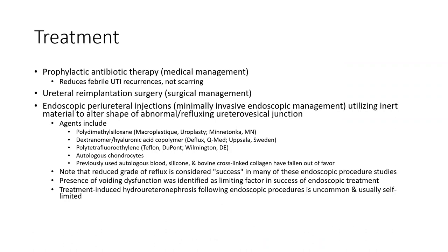Treatment options include: prophylactic antibiotic therapy to reduce febrile UTI recurrence, ureteral reimplantation surgery, and endoscopic periureteral injection utilizing a bulking material to alter the shape of the abnormal refluxing ureterovesical junction. Agents include polydimethylsiloxane, dextranomer, and hyaluronic acid copolymer.